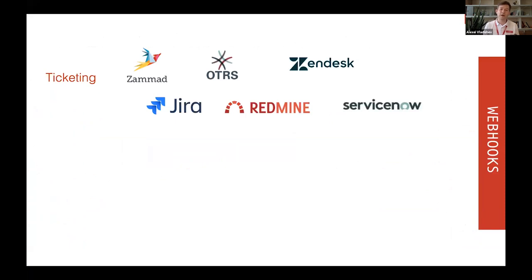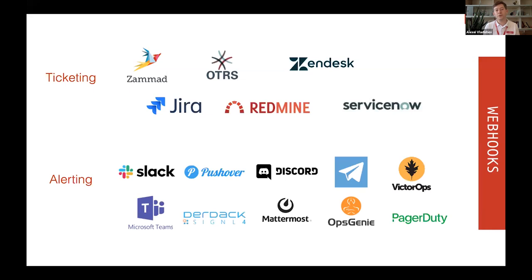Zabbix 5.0 comes with support for ticketing systems out of the box — integrations ready to use with OTRS, Jira, Jira Service Desk, Zendesk, ServiceNow, ZAMet, and others. Zabbix also comes with support for many alerting and notification systems out of the box: Slack, Microsoft Teams, Opsgenie, PagerDuty, VictorOps, Mattermost, and many others. We're not just delivering software — we're delivering ready-to-use integrations, so you can install Zabbix 5.0 and those integrations are available out of the box.